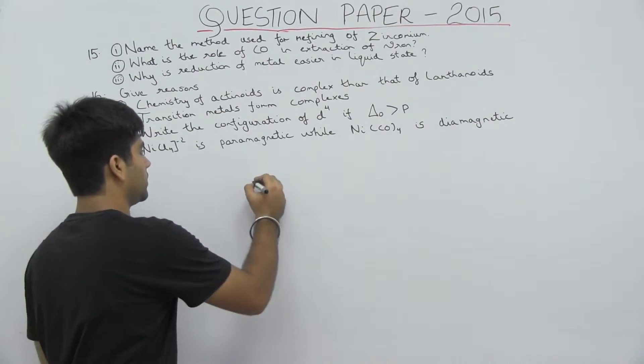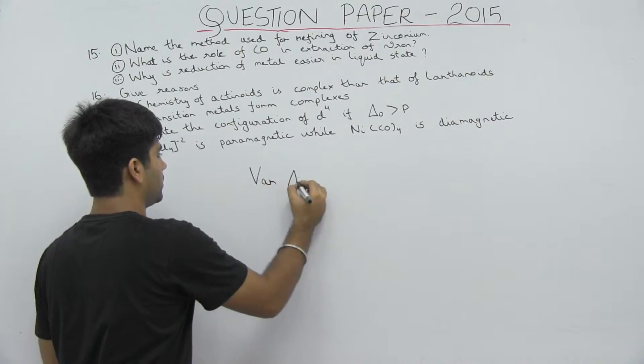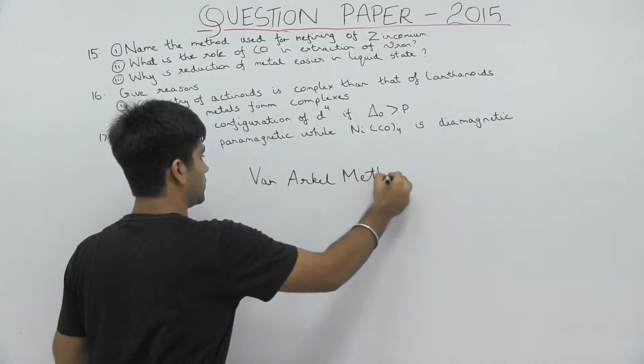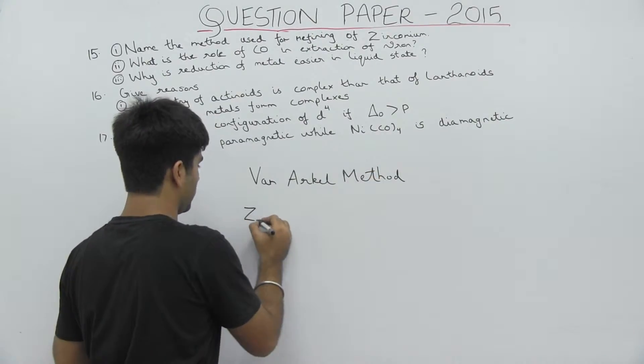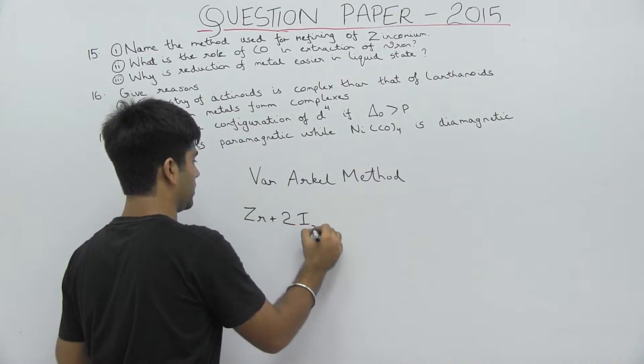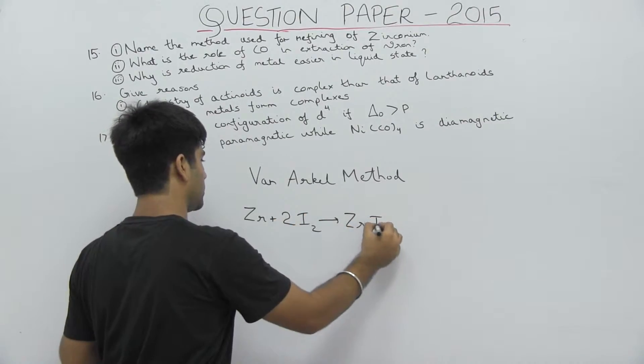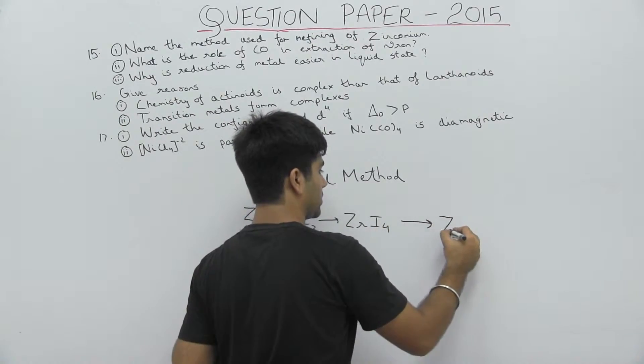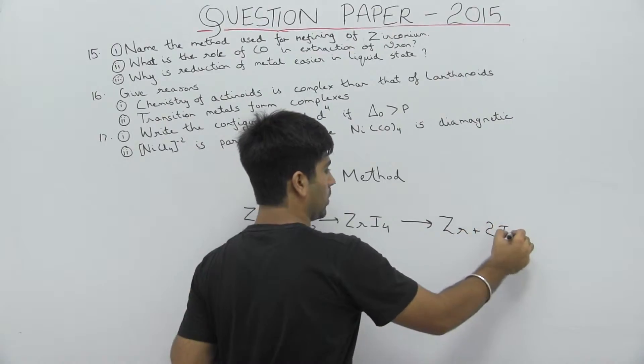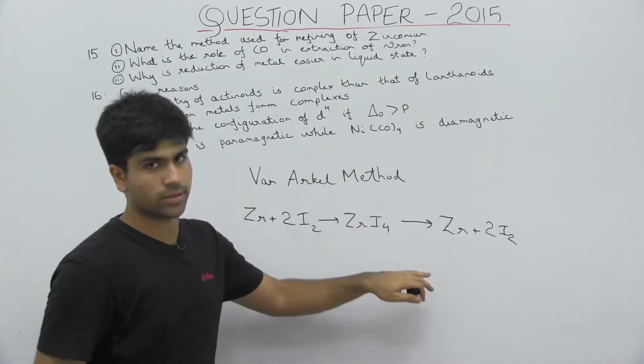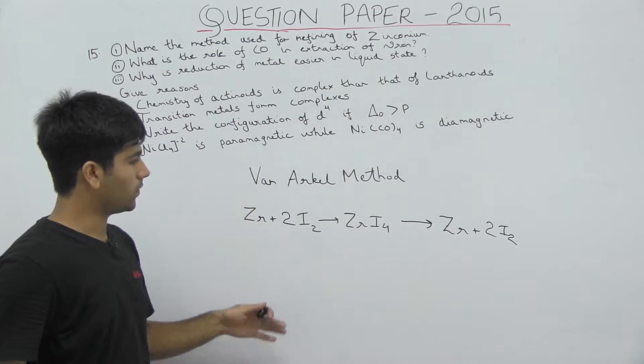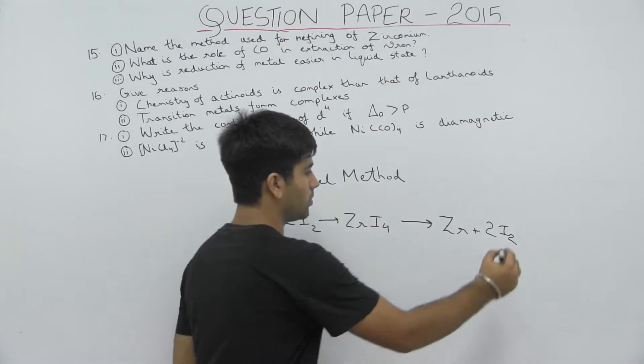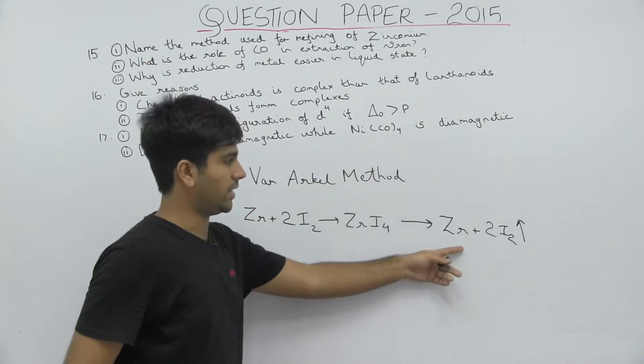Zirconium refining uses the Van Arkyl method. In this case, we react iodine with zirconium to form ZrI4, and then we heat it further, which gives Zr and 2I2. We get pure Zr because our impurities do not react with iodine, and we release iodine and get Zr in a pure form.